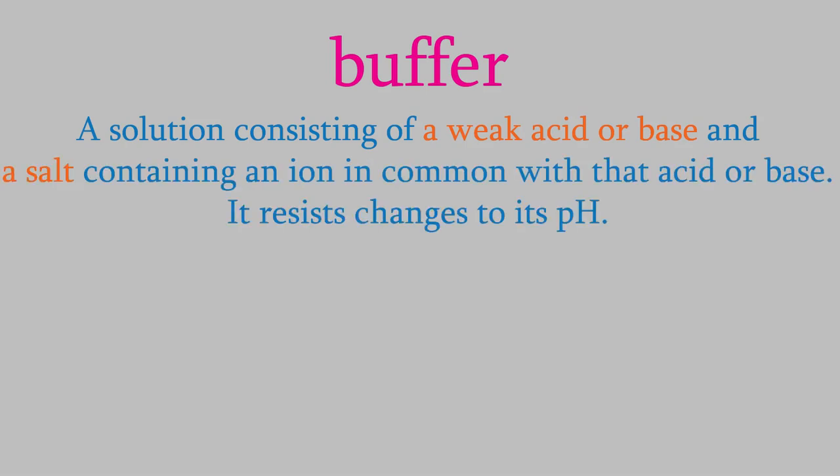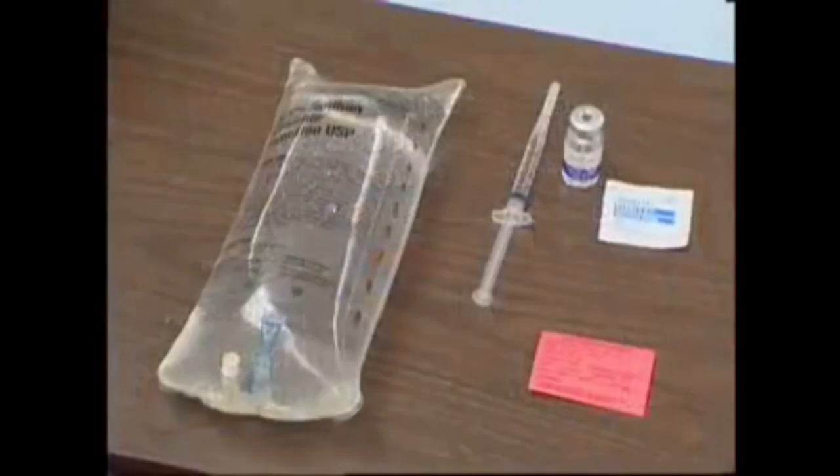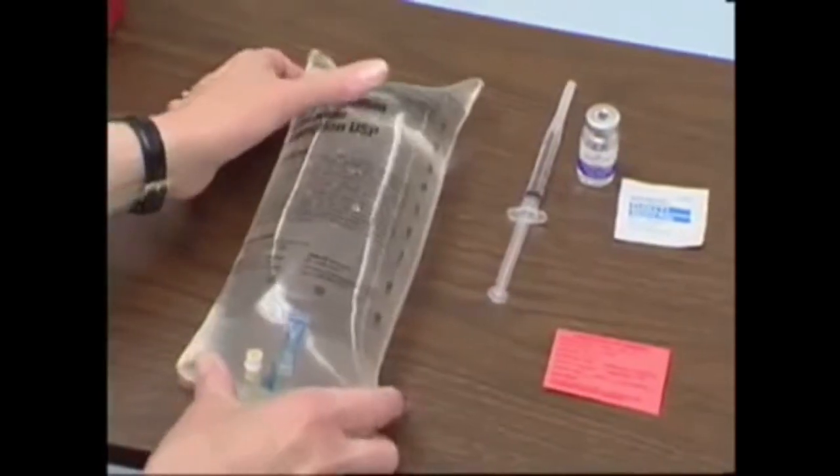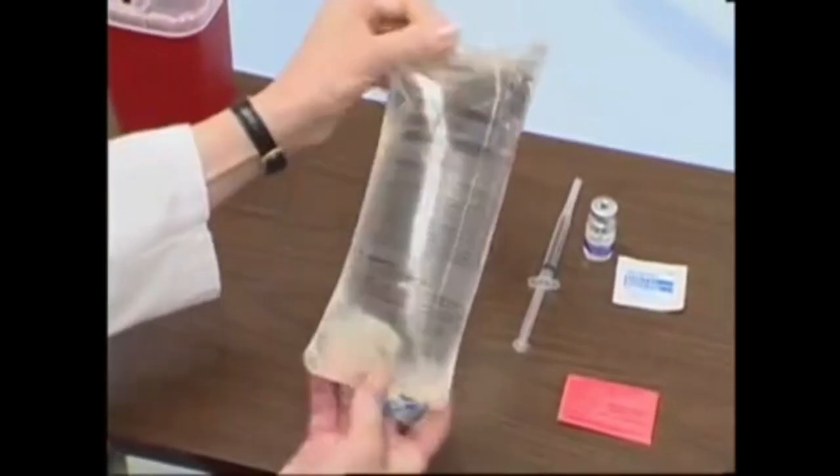Remember, a buffer always contains a weak acid or base, and a salt that has an ion in common with the weak acid or base. In blood, the buffer is made of carbonic acid, which is a weak acid, and sodium bicarbonate, which is a salt. Here's the dissociation reaction for carbonic acid. The bicarbonate ion in sodium bicarbonate is part of both the salt and carbonic acid, so that makes this a buffer. As you could probably guess, if we prepare an IV solution that will be injected into someone's bloodstream, it needs to have the same pH as the blood. For that reason, IV solutions contain a buffer.